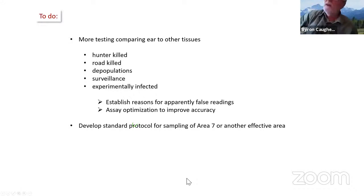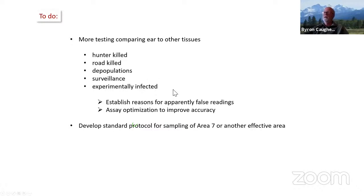We still have a lot to do: more testing comparing ear samples to tissues, looking at hunter-killed and road-killed animals, depopulated surveillance animals, and experimentally infected animals to establish reasons for apparent false readings and to optimize the assay for improved accuracy, to figure out just how early we can pick up infections in ear, and to develop a standard protocol for sampling of area seven or another effective area of skin.